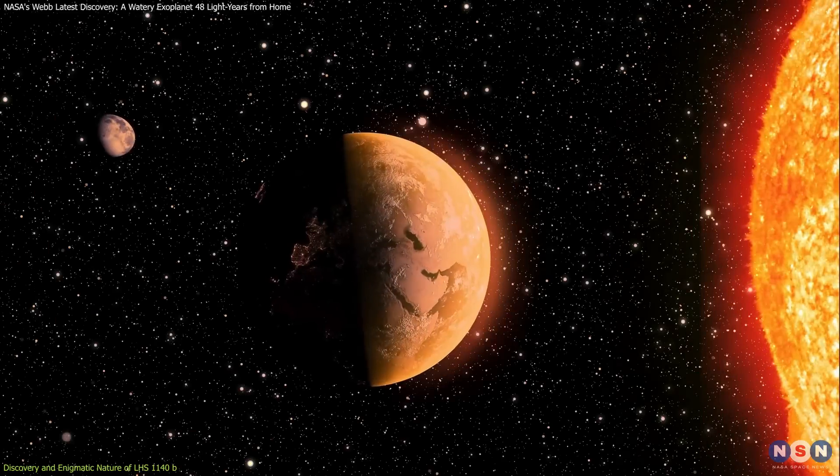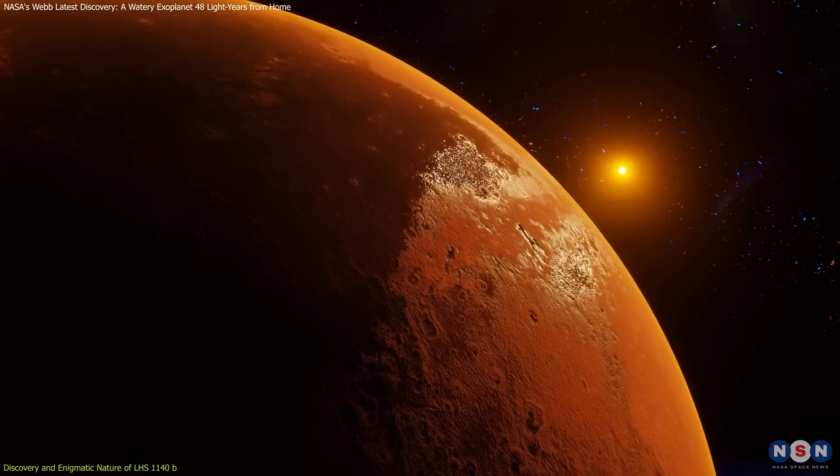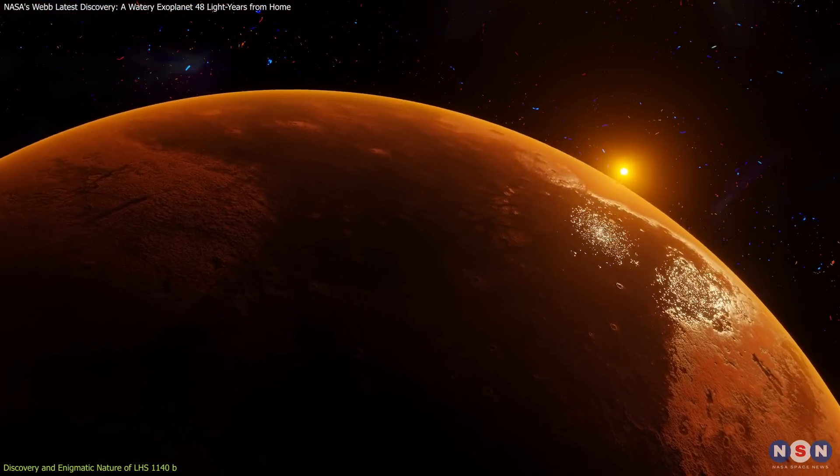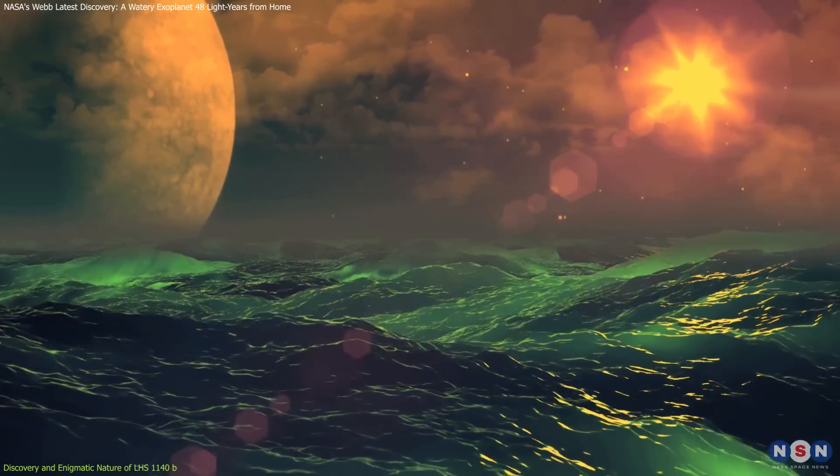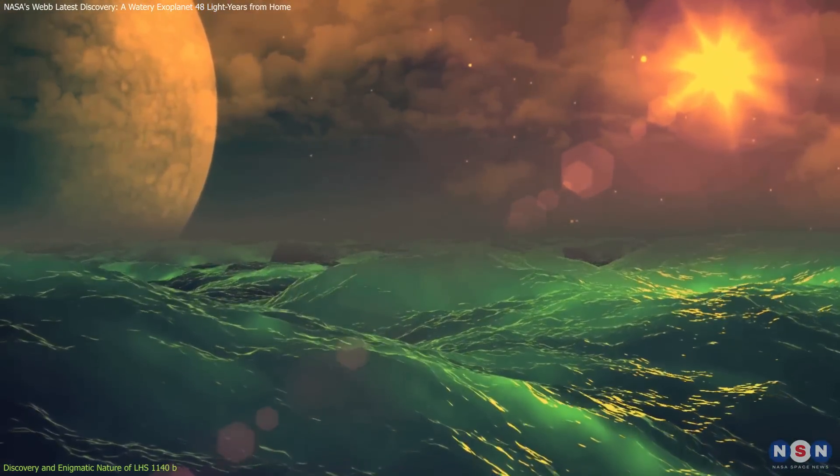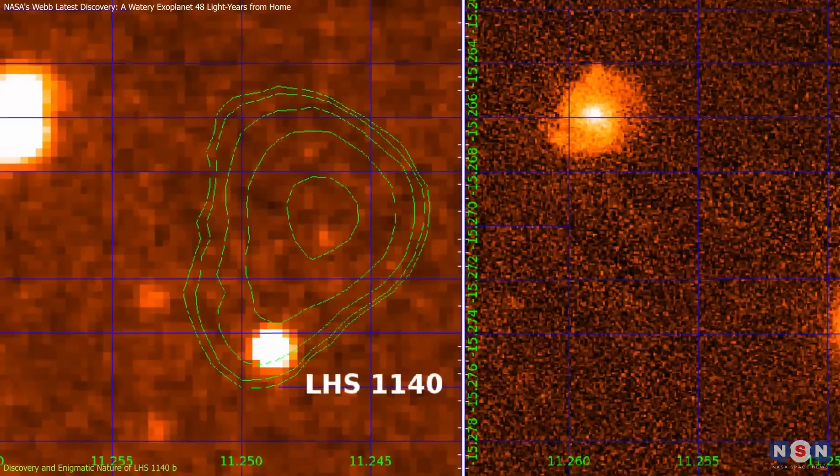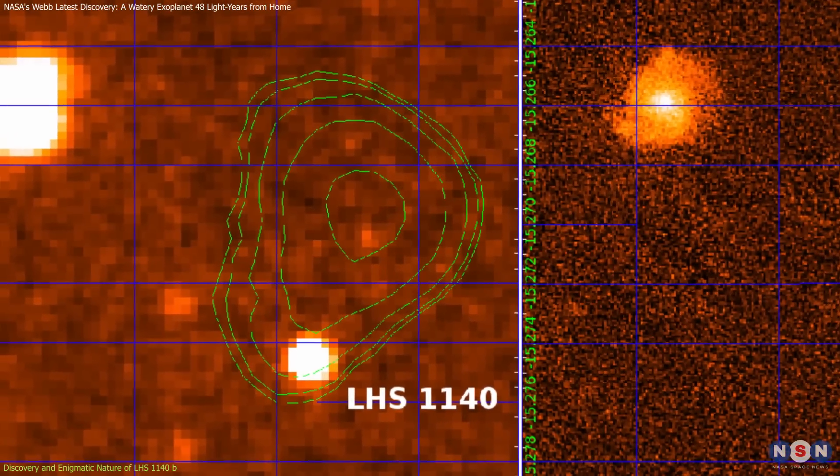The habitable zone is the key term here. This exoplanet orbits within this zone around its red dwarf star, a zone where temperatures are just right for liquid water to exist. This positioning is crucial because water is a cornerstone of life as we know it.